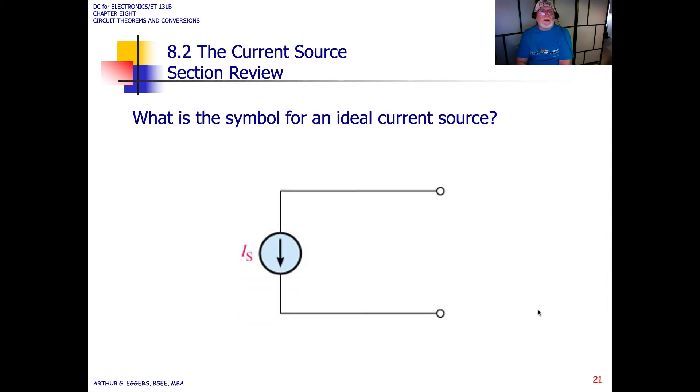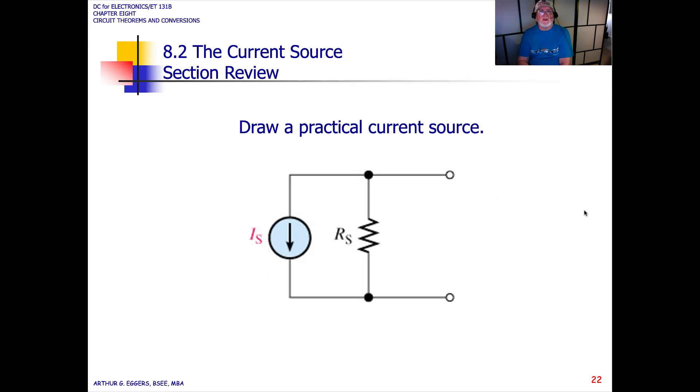What is the symbol for an ideal current source? Well, just as we've seen before, it is just the source with no impediments, no resistor. The practical current source then has a resistor in parallel or shunt with the load itself and with the source.